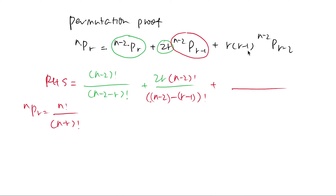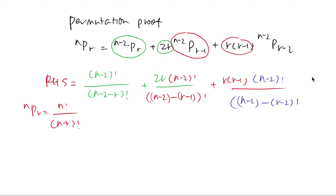r and r+1 are constants so we put them at the front. Then it will be (n-2) factorial over (n-2-r-2) factorial. Simplifying a little bit: (n-2-1) becomes (n-r-1) factorial, and this one becomes (n-r-2) factorial.